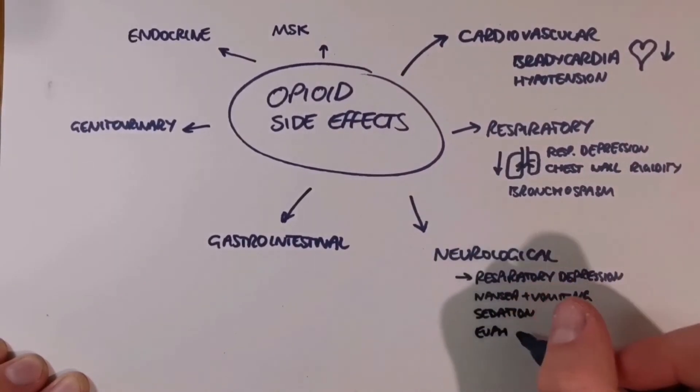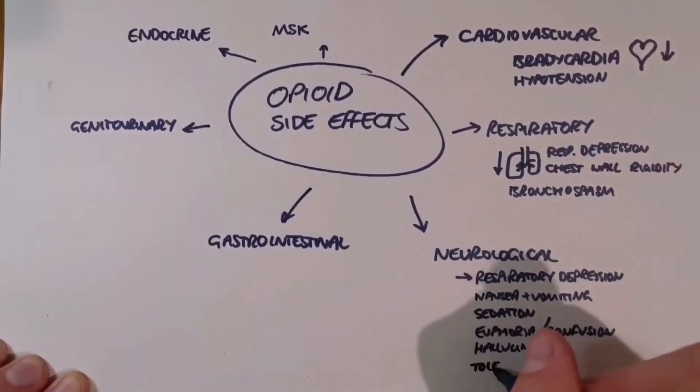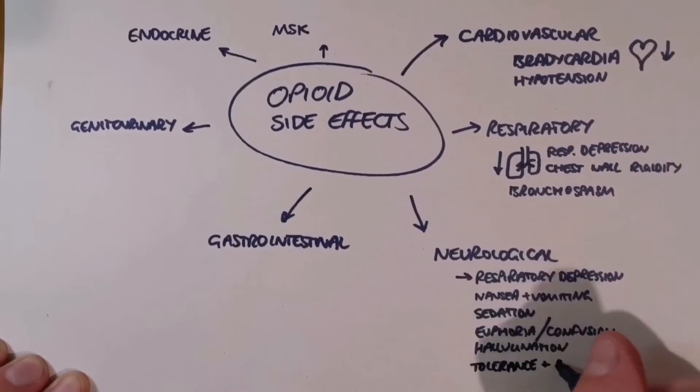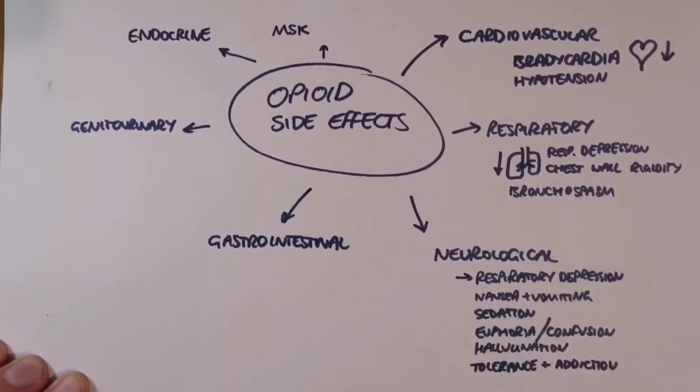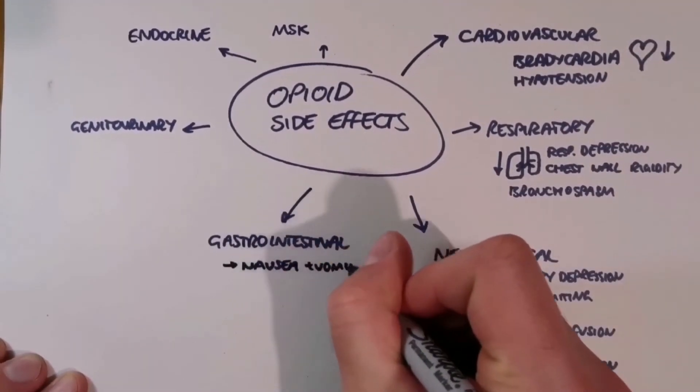Respiratory depression can also be considered a neurological side effect, and opioids also cause sedation, confusion, hallucinations, and addiction.